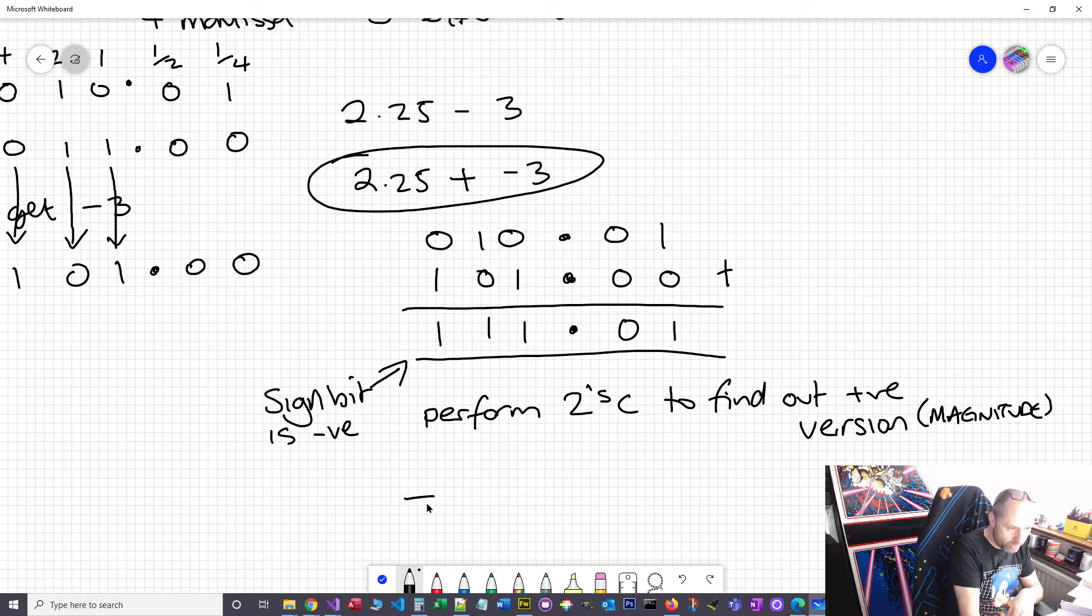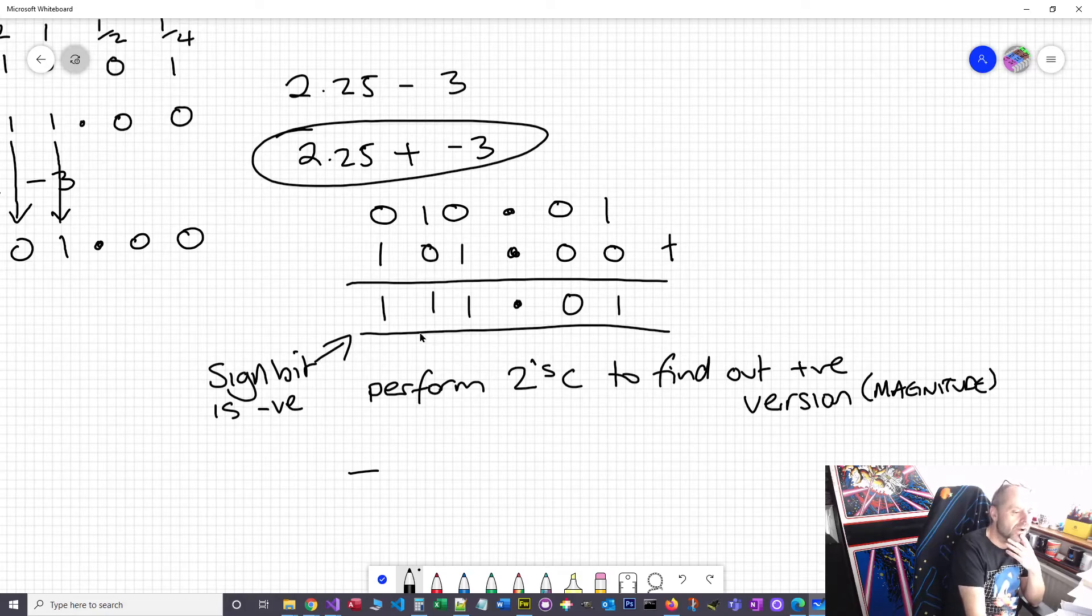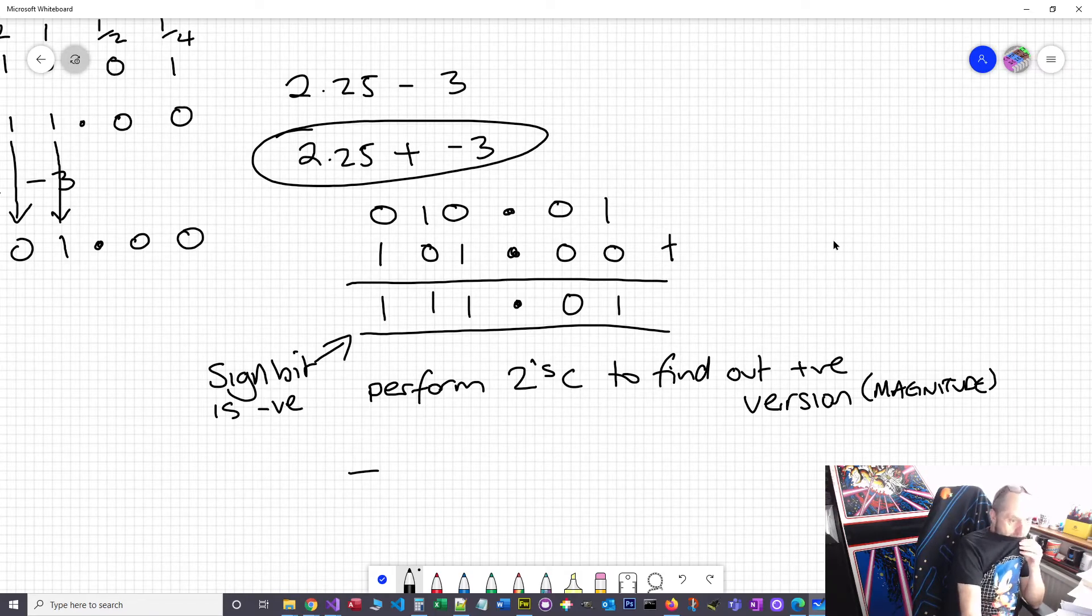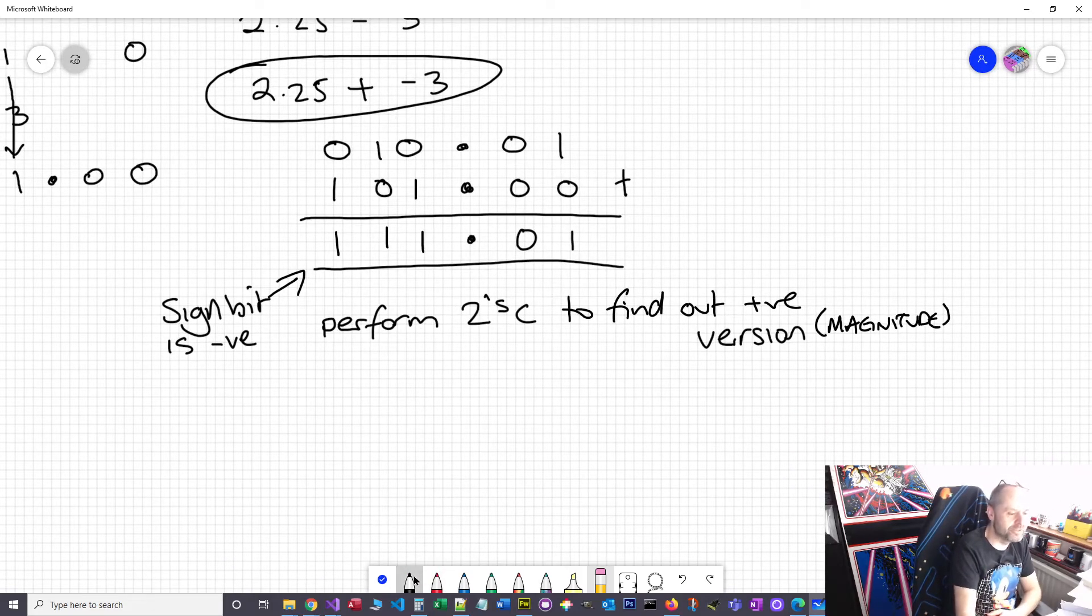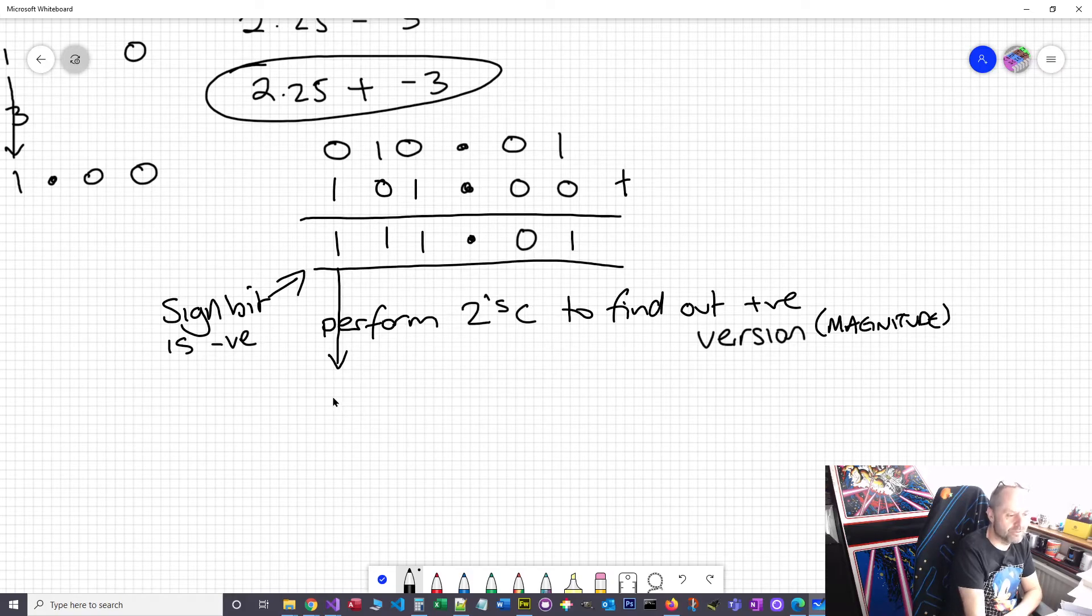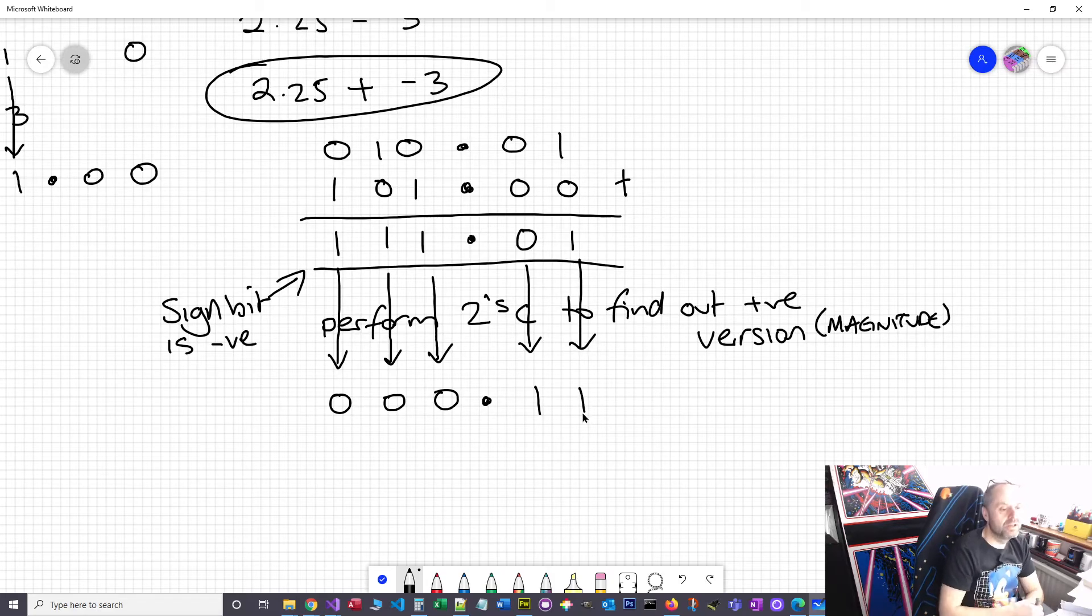So that's going to give us the positive version or the magnitude of this number. We know it was negative, so when you're doing this, always say to yourself the answer is going to be minus - so I've written a minus down. I'm going to do my two's complement - flip, flip, flip, flip. Put the binary point in. That's the last one so we're going to keep that as a one. So this is - that was a half, that was a quarter - so this is plus 0.75.